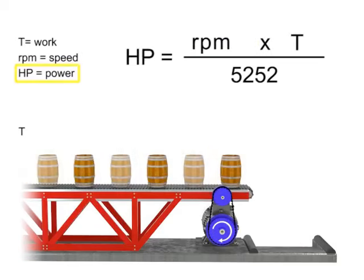If horsepower remains constant, then speed and torque are inversely proportional. As the torque increases, speed decreases to maintain constant horsepower. As torque decreases, speed must increase to maintain constant horsepower.